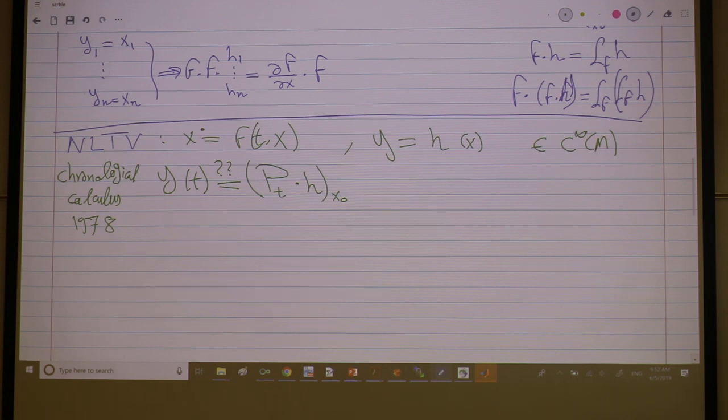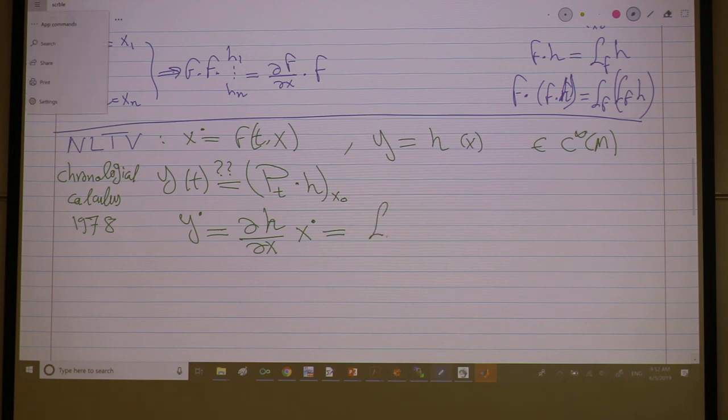So y dot, partial h partial t, is partial h partial x times x dot, which is, like we said, this is L_f h, or f acting on h.